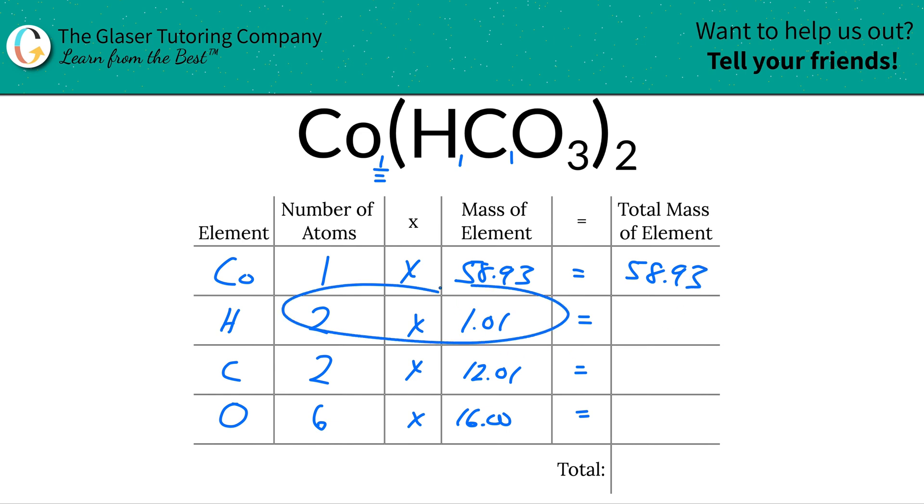Then for hydrogen now, each hydrogen is 1.01 units of mass, but we have two of them, so the total mass there is 2.02. For carbon, then we do that multiplication, so that'll be 24.02. And then same thing for oxygen, that'll work out to be about 96.